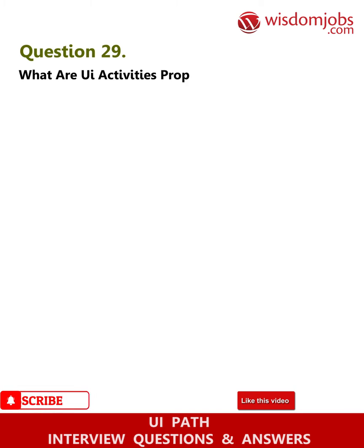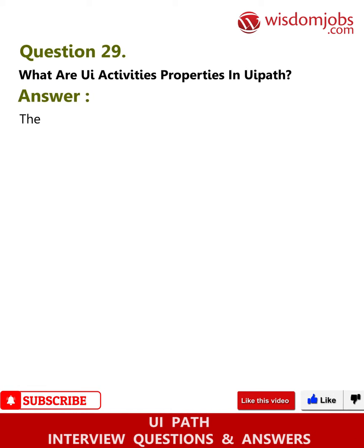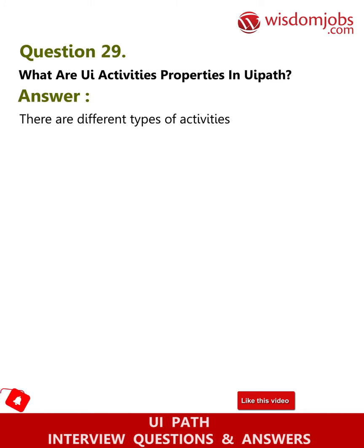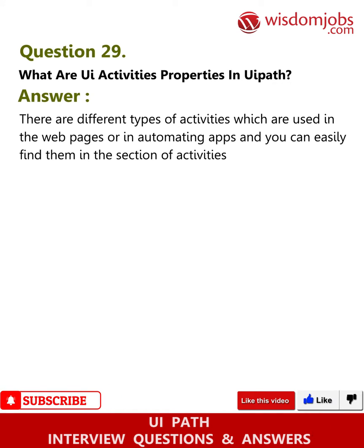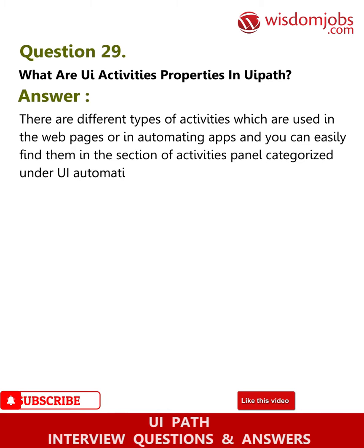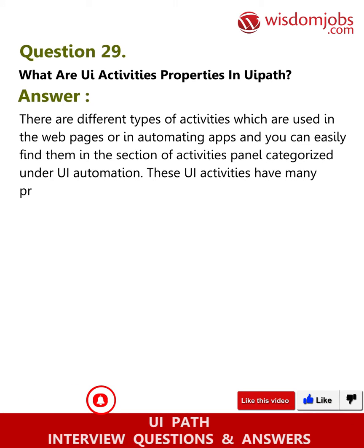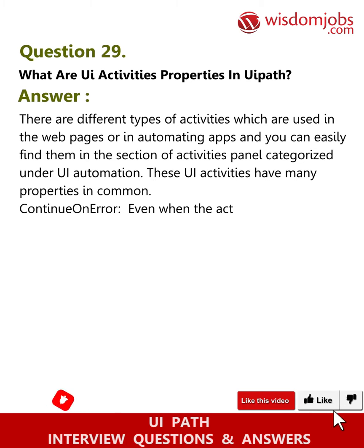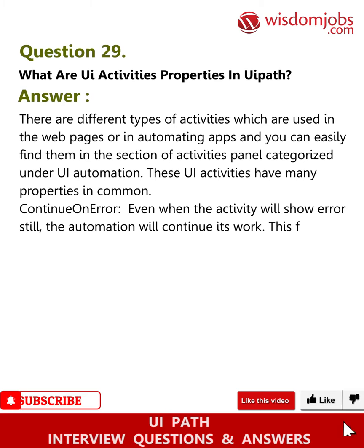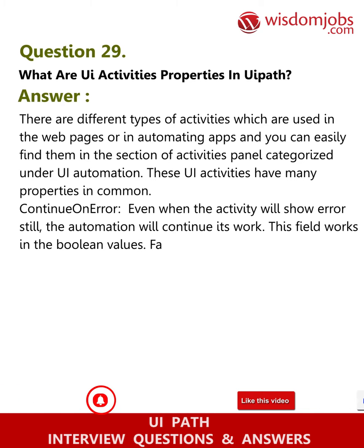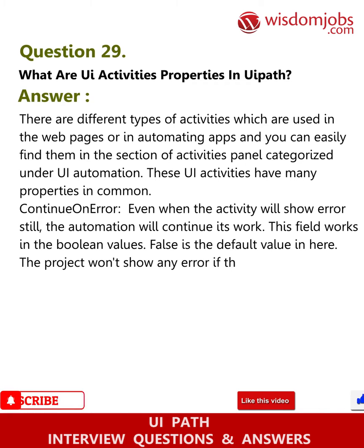Question 29: What are UI activity properties in UiPath? Answer: There are different types of activities used in web pages or automating apps, found in the Activities panel under UI Automation. These UI activities share many common properties. Continue on Error: even when the activity shows an error, the automation will continue. This field works with Boolean values; False is the default, and if set to True inside a Try Catch, the project won't show any error.